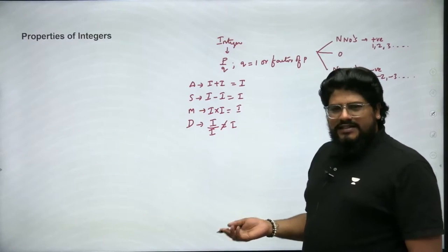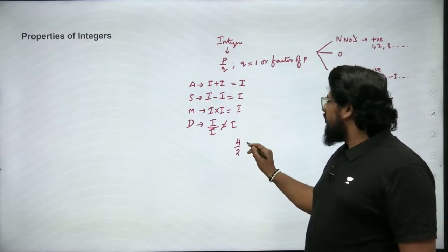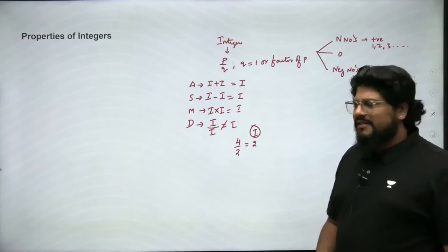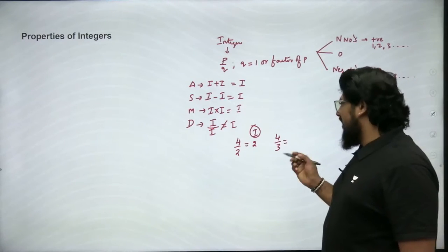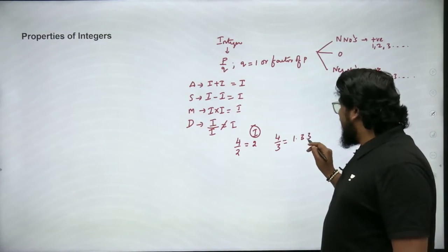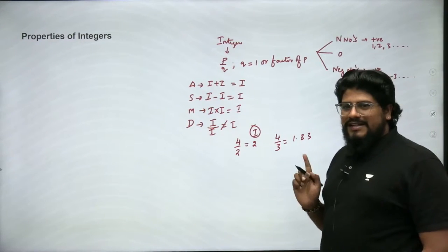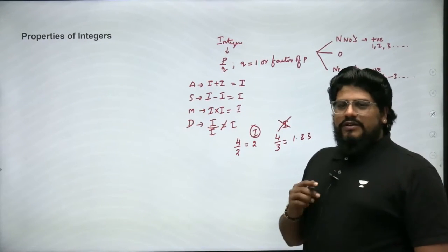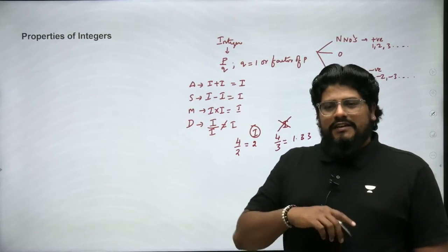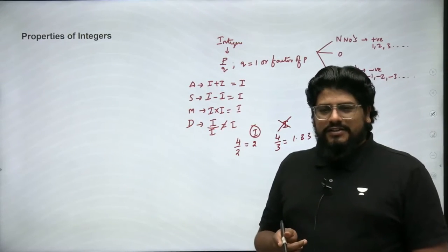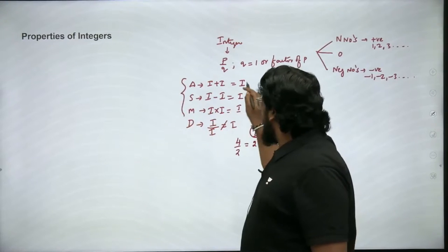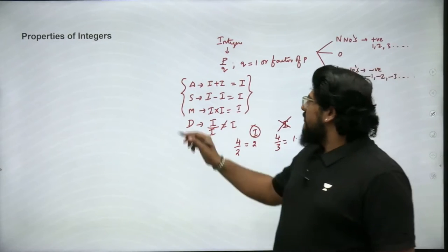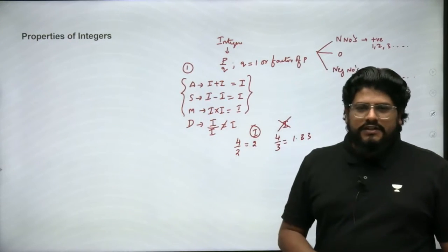You need to be careful — it's not always necessary that the result is an integer. For example, 4 ÷ 2 = 2, which is an integer. But 4 ÷ 3 = 1.33, which is a decimal number — not an integer. So when it comes to division, we can never say the division of two integers will always yield an integer. In all the other three operations, we can definitely say the result is an integer. This is the first property: arithmetic operation properties of integers.